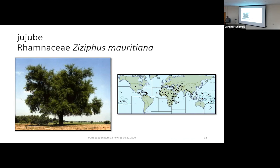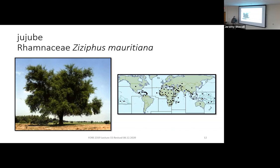We'll now shift from gymnosperms to angiosperms, starting with tropical and subtropical species, then moving on to temperate and even boreal species.